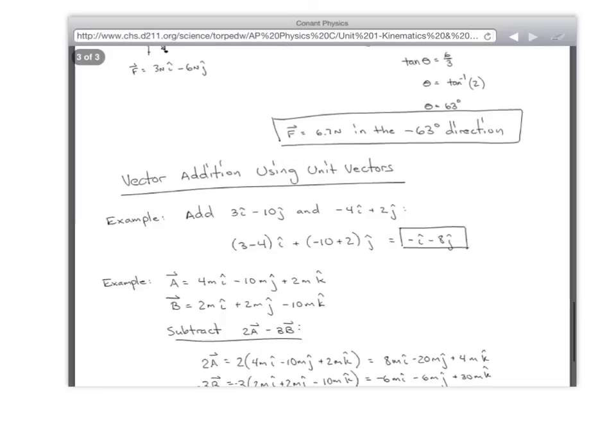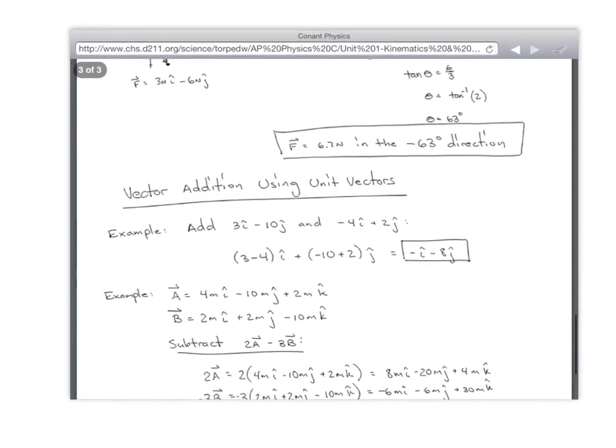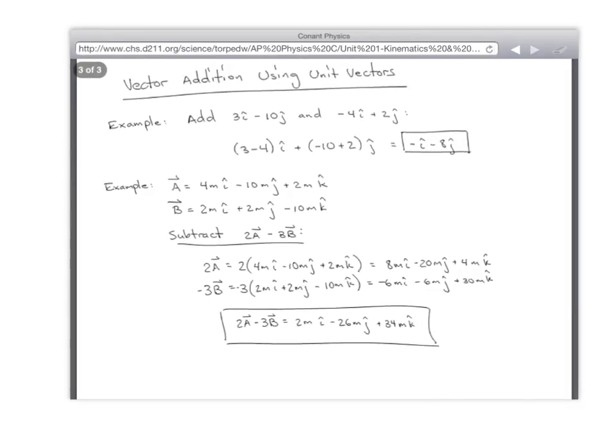But what if I wanted you to do 2a minus... Oh, 2a. First, you'd have to multiply and multiply, and then... Multiply, right? So 2 times a, which is 8i minus 20j plus 4k, and then negative 3b. Negative 6i... Right. Negative 6i... And you end up with 2i minus 3b is that. Everybody got it? Yeah.